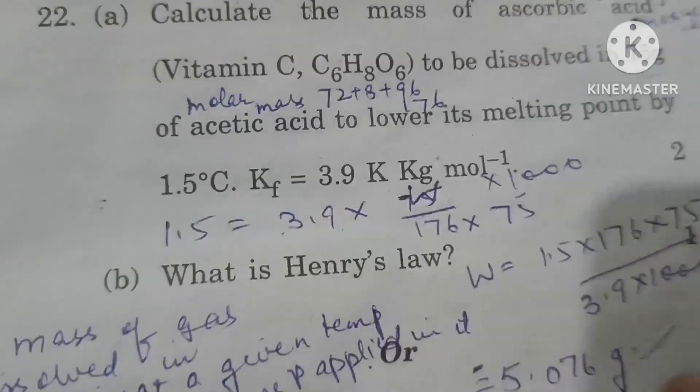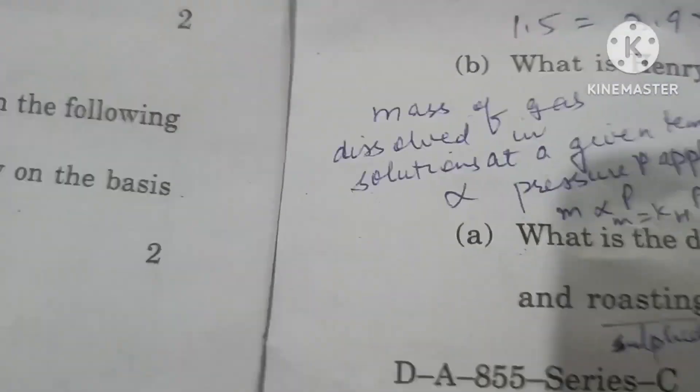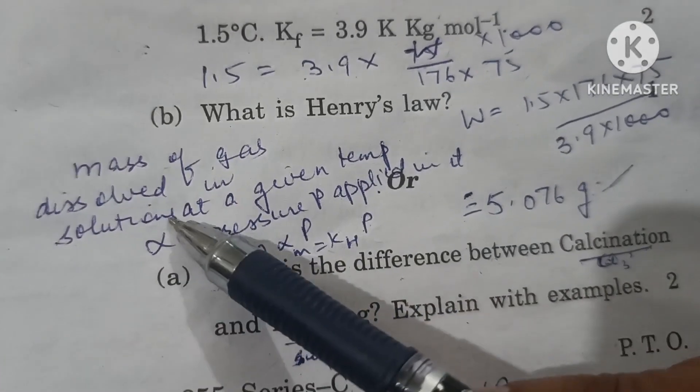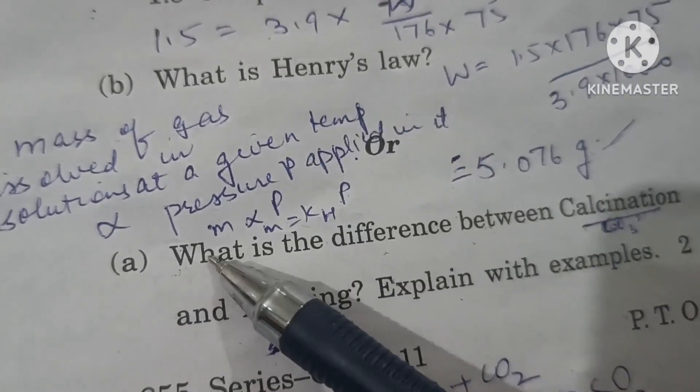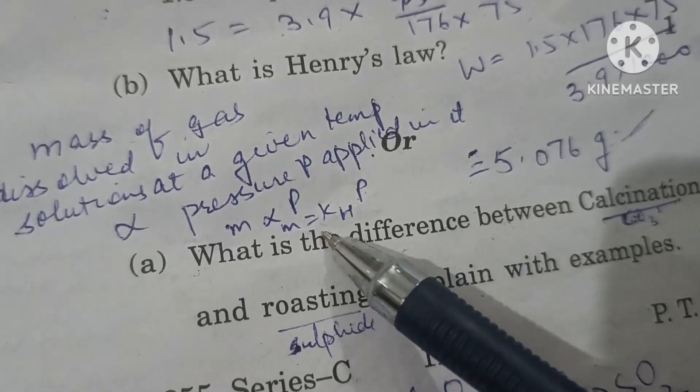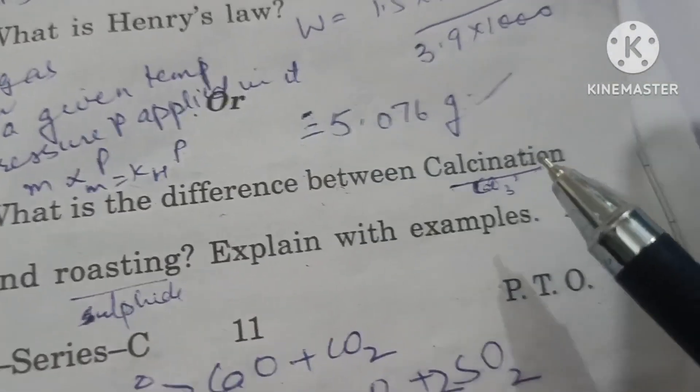What is Henry's law? Henry's law states that the mass of a gas dissolved in a solution at a given temperature is directly proportional to the pressure applied on it. m is proportional to p, m equals Kh times p, where Kh is the Henry's constant.